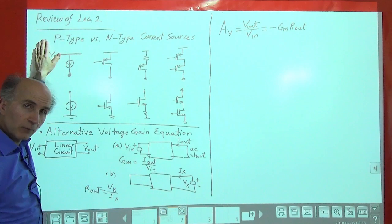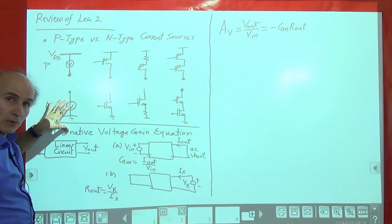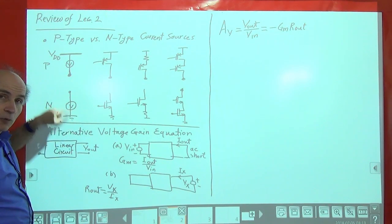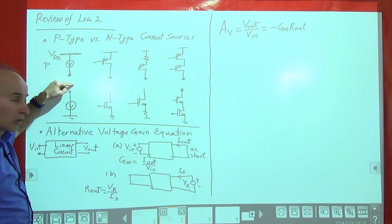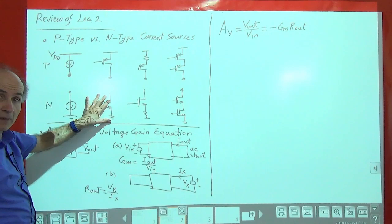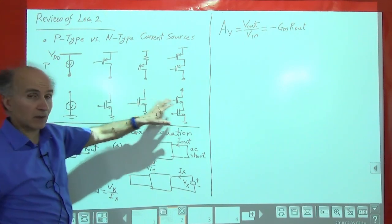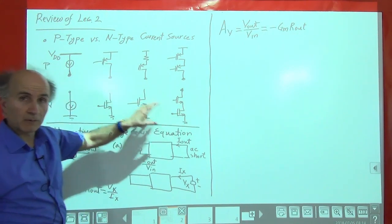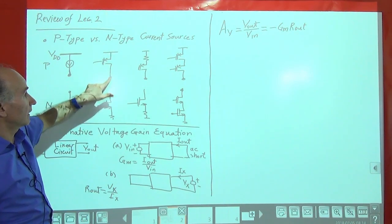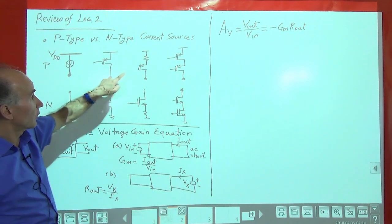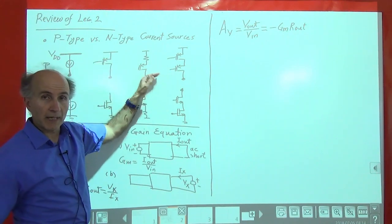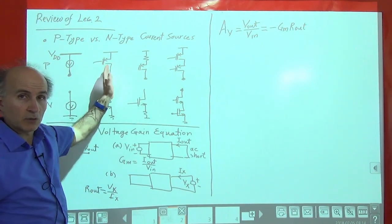Generally, for n-type current sources, we are trying to draw a current from a node in the circuit to ground. For p-type, we're trying to inject a current into a node from VDD. For the n-type, we can use an n-MOS device — we can degenerate it or we can cascode it. Similarly, for the p-type, we can use a p-MOS device with the source connected to VDD and the drain connected to the node of interest. Or we can degenerate it or cascode it, depending on the amount of output impedance we are looking for.